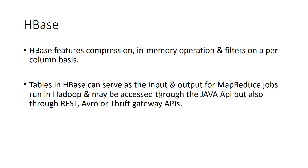HBase features compression, in-memory operation, and filters on a per-column basis. It compresses the data and the in-memory operation enables fast read and write access for real-time or live applications. Unlike HDFS — which lacks in-memory operation and is used mainly for analytical operations — HBase is suited for live applications. It compresses, performs in-memory operations, and applies filters per column, giving it fast read and write access.